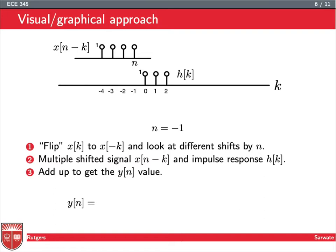I'm going to slide this along. When n is equal to -1, there's no output because these two signals, when I do the multiplication, don't even overlap.